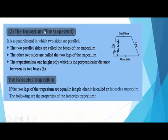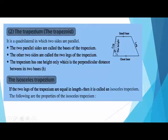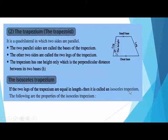The second figure in our lesson today is the trapezium. The trapezium is a quadrilateral which has two parallel sides — the smaller side is called the small base and the greater one is the greater base. The two parallel sides are called the bases, and the other two sides are called the legs. The height of the trapezium is the perpendicular distance between the two bases. If the two legs are equal in length, it is called an isosceles trapezium.